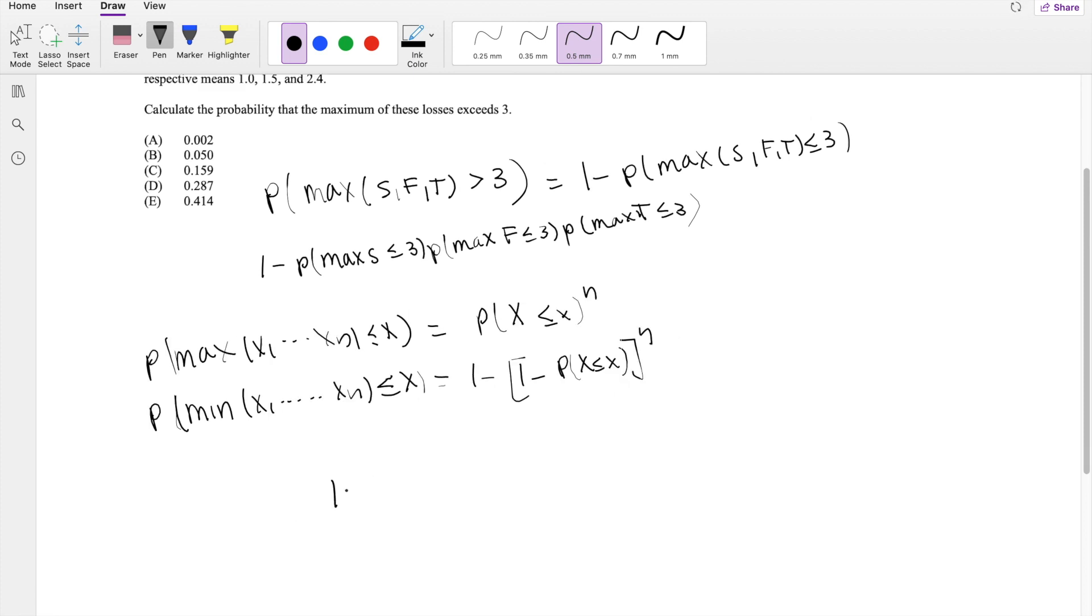So then using that, we can just say this is equal to 1 minus the probability that S is less than 3, probability that F is less than 3, and finally the probability that T is less than 3.